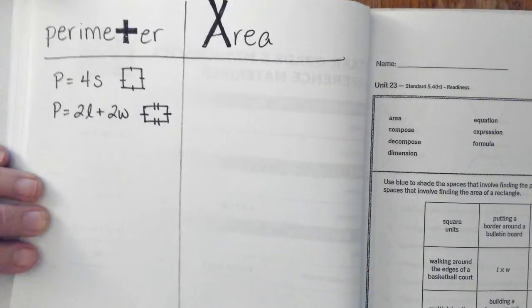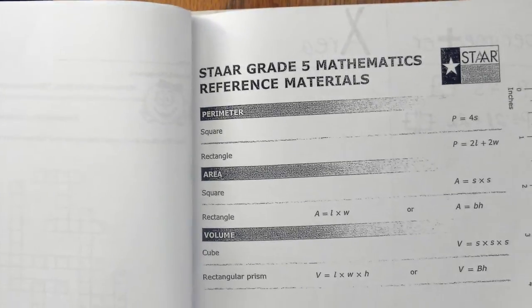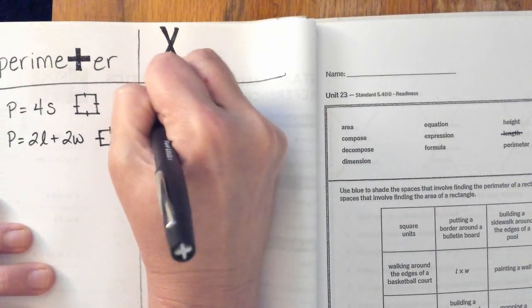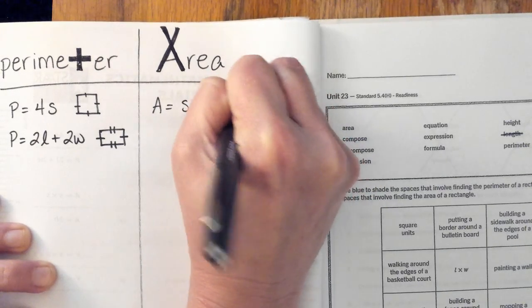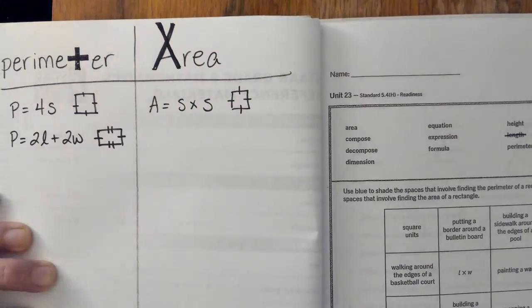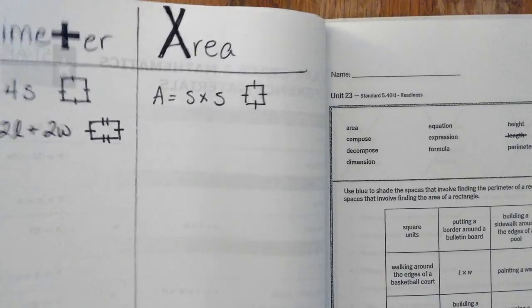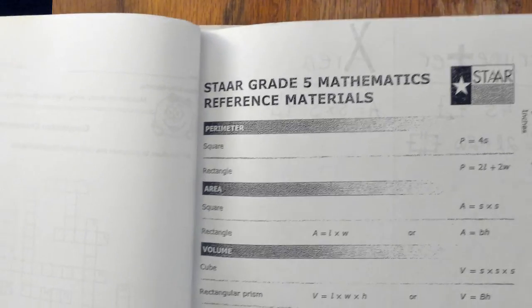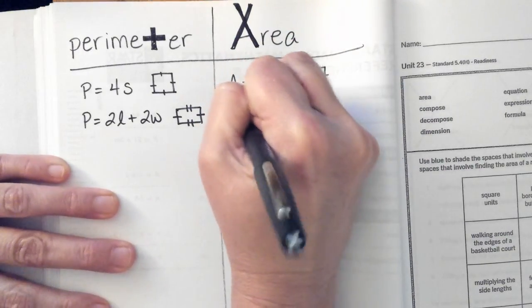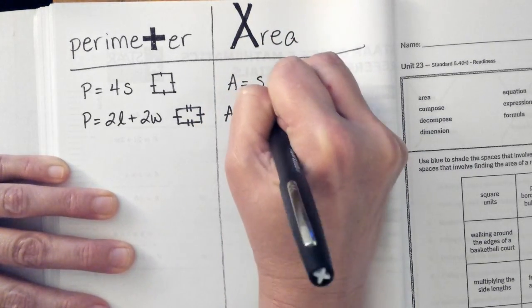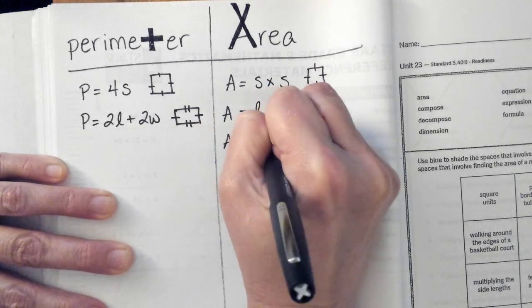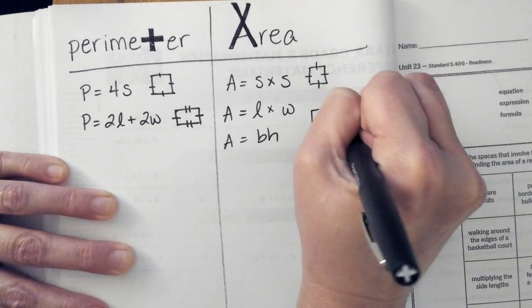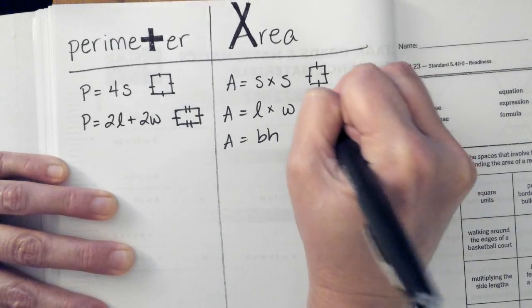The formulas for area for a square is side times side. And again, that's because with a square, all the sides are the same length, and the formula for a rectangle is either length times width, or base times height. And that is true for our rectangle.